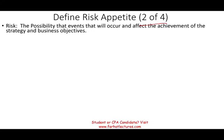Different risks occur for different companies. A restaurant company faces very different risks than an airline company or a beachfront property owner. For example, restaurants are concerned about food safety; airline companies worry about airplane safety or credit needed to survive; and a beachfront property owner worries about a hurricane destroying their property. Risk and all these factors will affect their business objectives and prevent them from reaching their strategy.